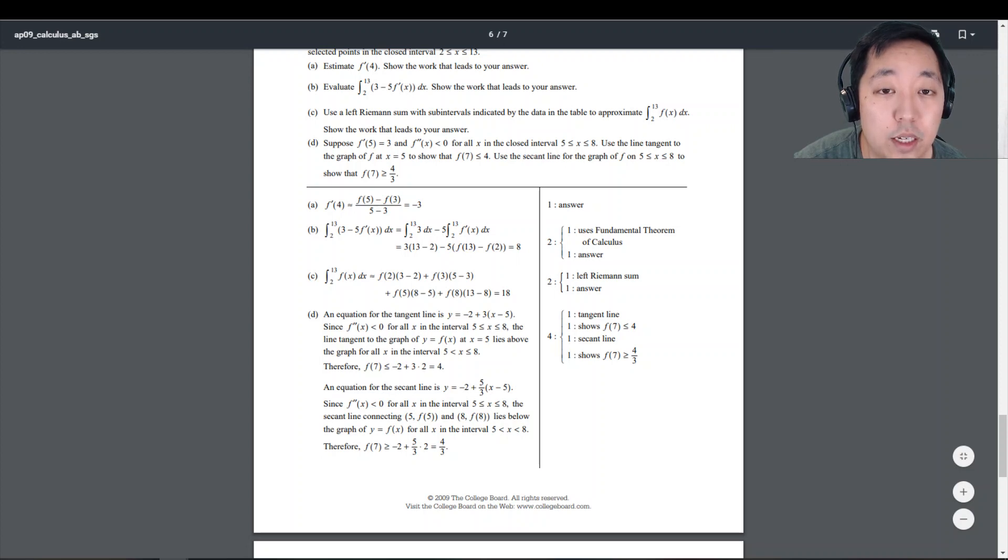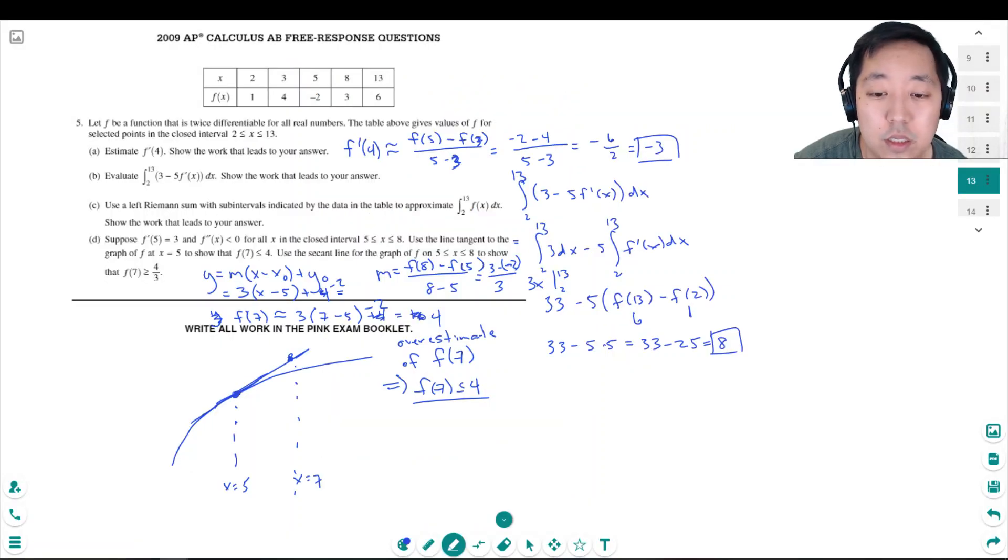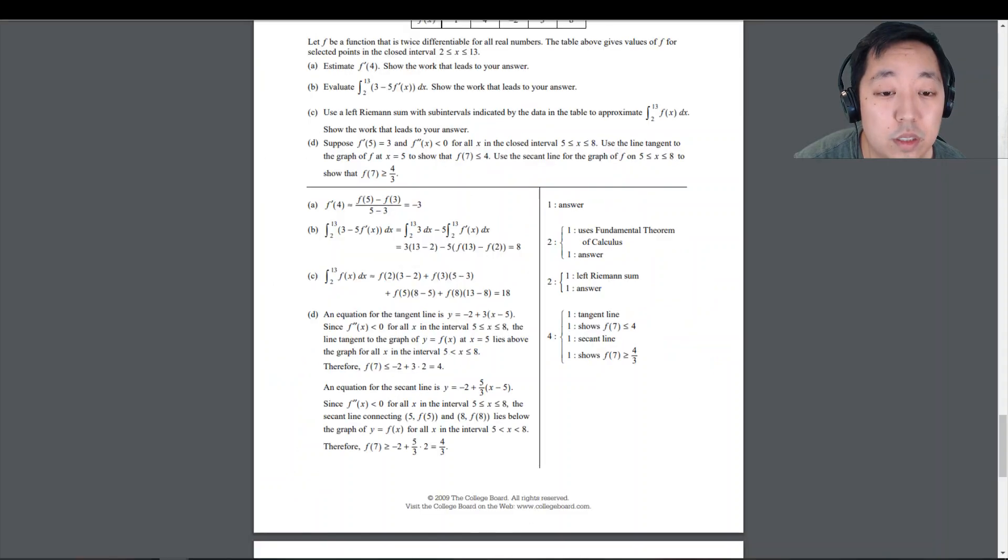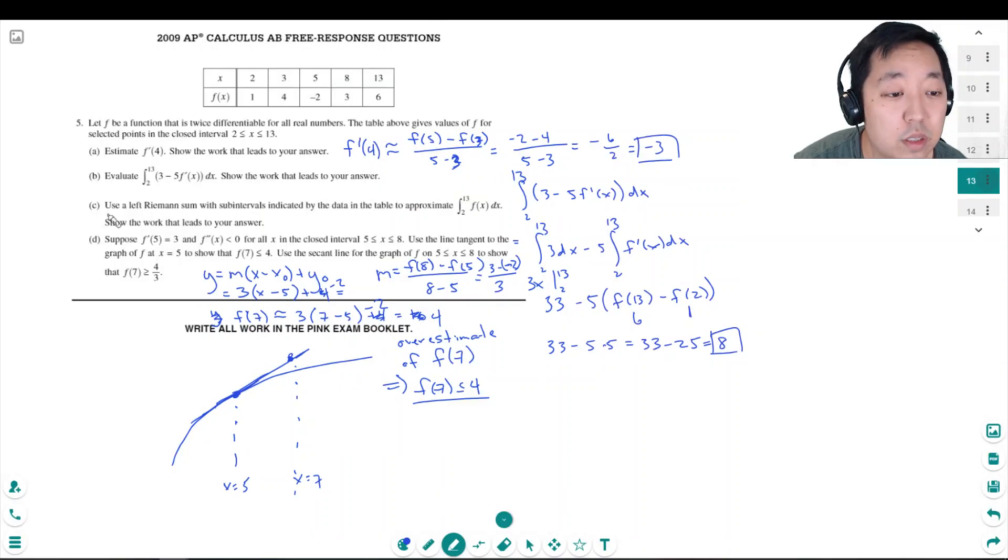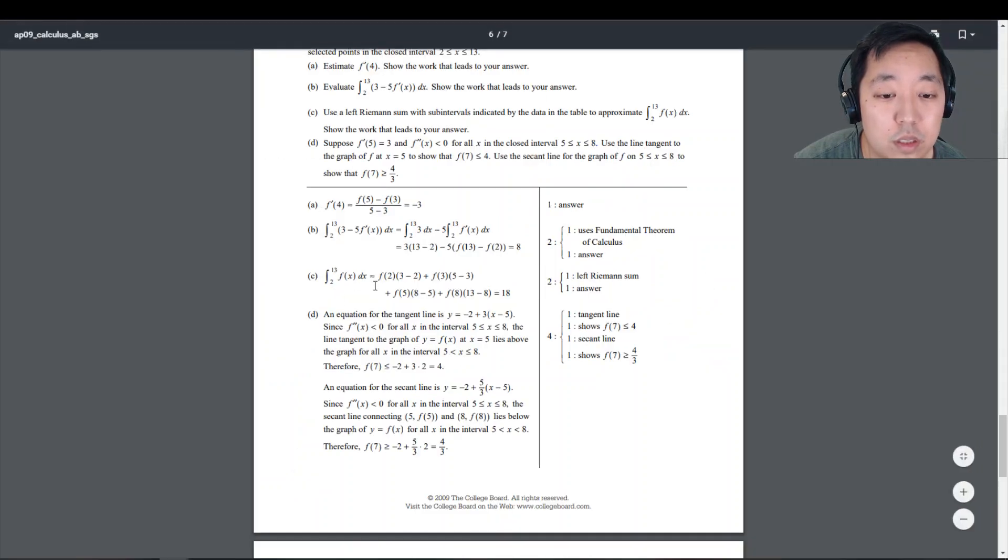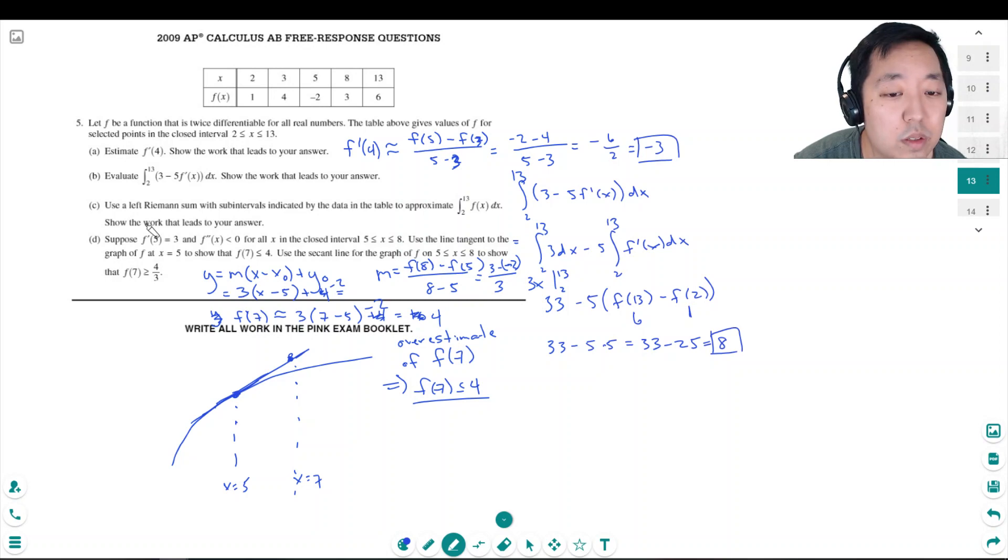Let's just check our answers. Negative 3, 8. Oh, I missed this complete problem. Use the subintervals to approximate that integral. Oh man, I didn't even see that part. I just jumped to D.